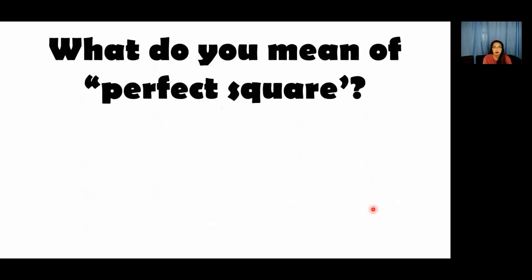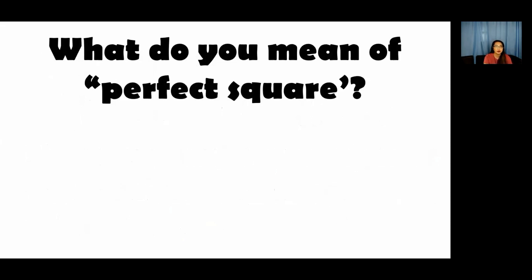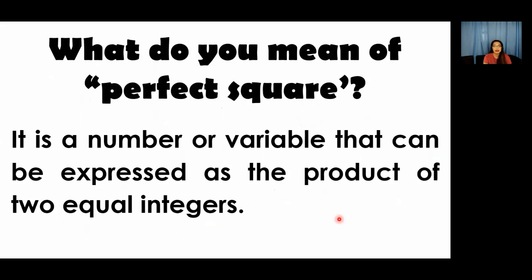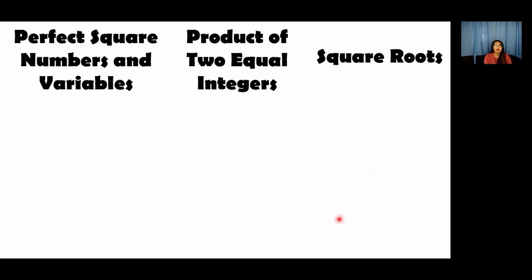So what do we mean by perfect square? A perfect square is a number or a variable having a square root. It is a number or variable that can be expressed as a product of two equal integers. Let us have some examples of perfect square numbers and variables. We have 1 — it is a perfect square because it is a product of two equal integers, 1 times 1 equals 1.